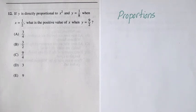Question 12 reads, if y is directly proportional to x squared and y equals one-eighth when x equals one-half, what is the positive value of x when y equals nine-halves?